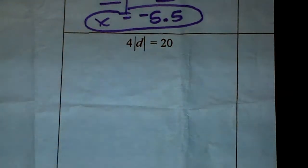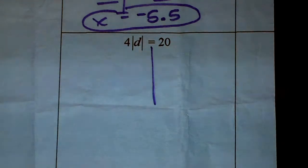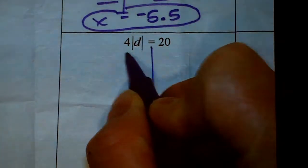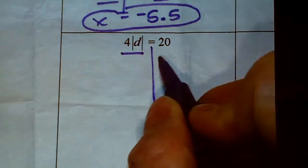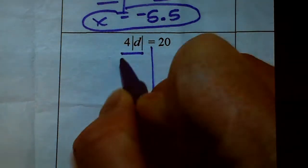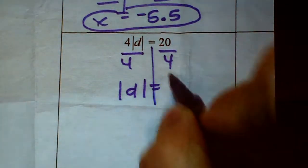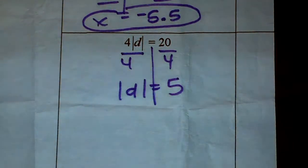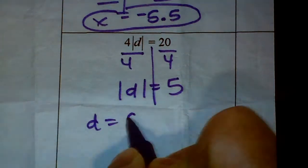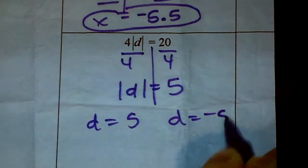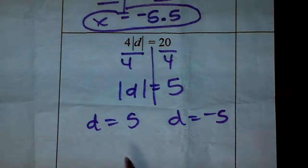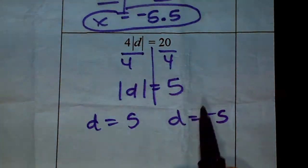Next: 4|D| = 20. The 4 is not inside with D, so I divide both sides by 4. The absolute value of D equals 5. D can be 5 or D can be negative 5, because both 5 and negative 5 have an absolute value of 5.